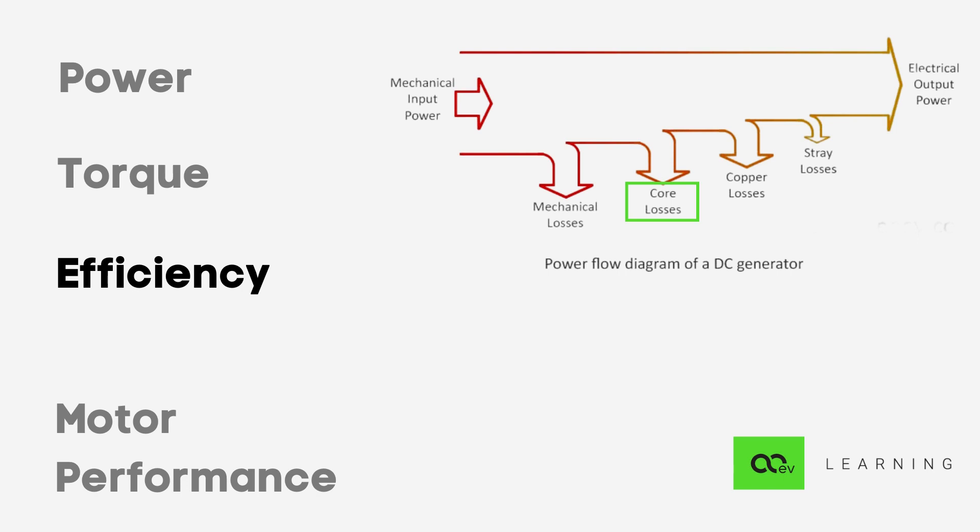These losses consist of hysteresis loss, eddy current loss, and excess loss. Hysteresis and eddy current losses are proportional to frequency and square of frequency respectively. Mechanical loss in an electrical machine basically consists of bearing friction and windage loss. The windage, that is the friction loss, is the power required to rotate the air through the machine and ventilating ducts. Windage loss is approximately proportional to the square of speed of rotation of the machine. These losses are in form of heat and sound.